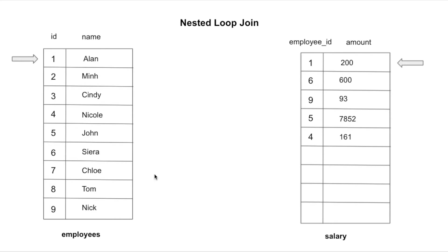Let's look at nested loop join. Here I have two tables — employees and salary — pre-populated with data. The nested loop join works exactly as the name suggests: it uses a double for-loop. I have a cursor on the top row of the employees table and the same on the salary table. The first iteration looks at the first record in the employees table and compares it with all the records in the salaries table.